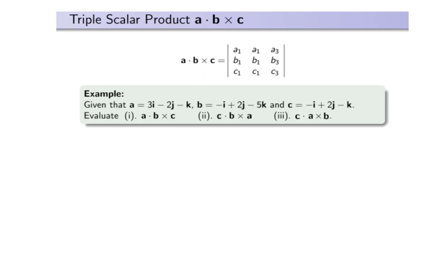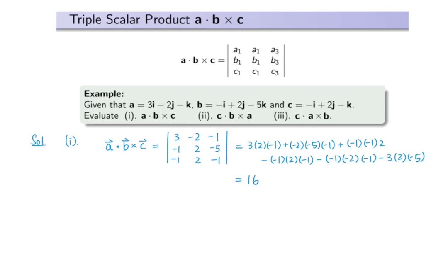Let's refer to this example. We are given vectors A, B, and C, and we would like to evaluate these three triple scalar products. Part 1 is straightforward. We get that A dot B cross C is 16.